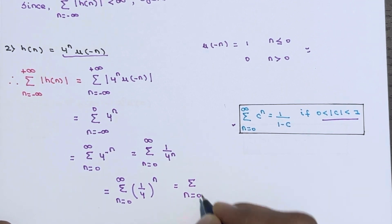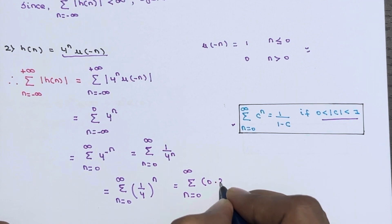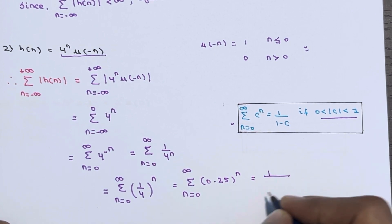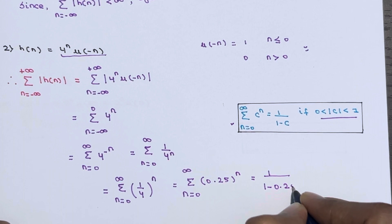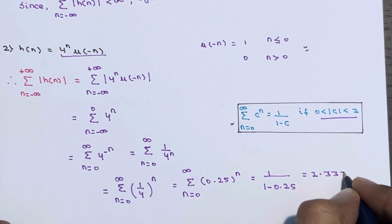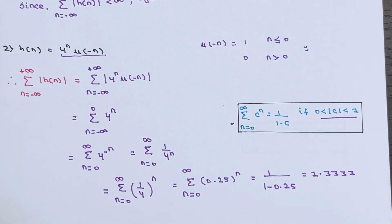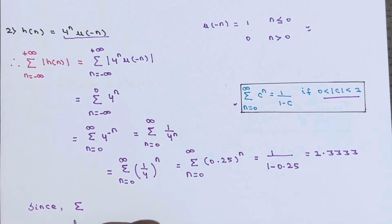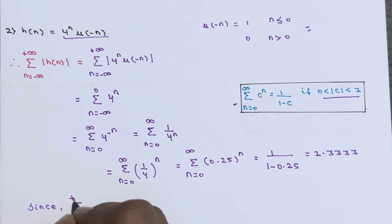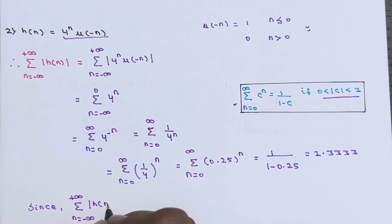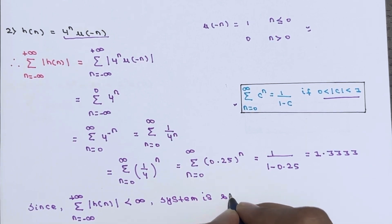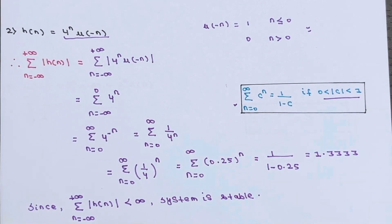Simplifying further, summation from n equals 0 to infinity of 0.25 to the power n becomes 1 divided by (1 minus 0.25), which gives 1.3333. Since this summation of absolute value of h(n) is smaller than infinity, the system is stable.